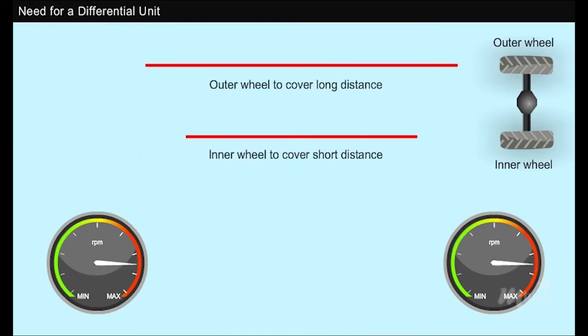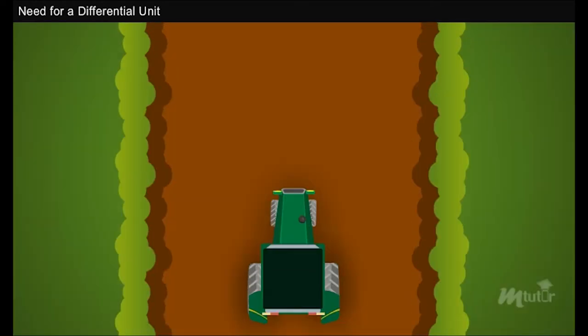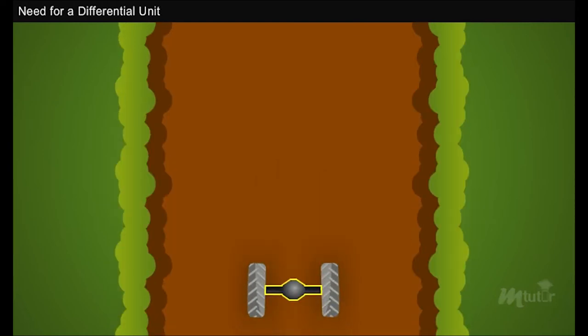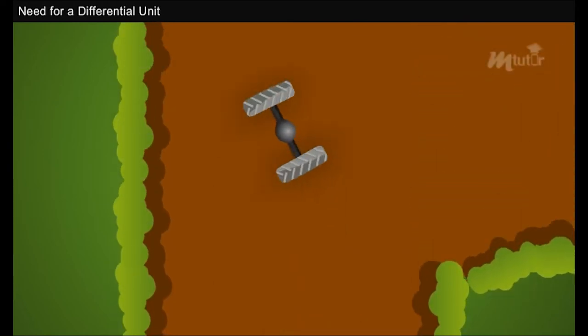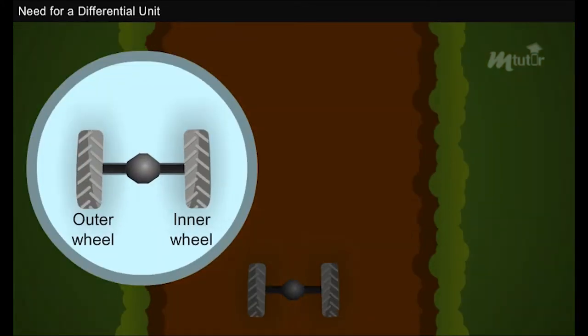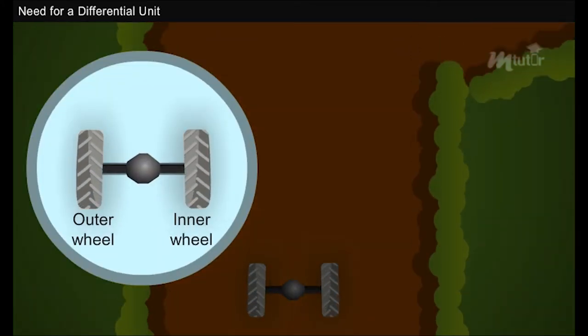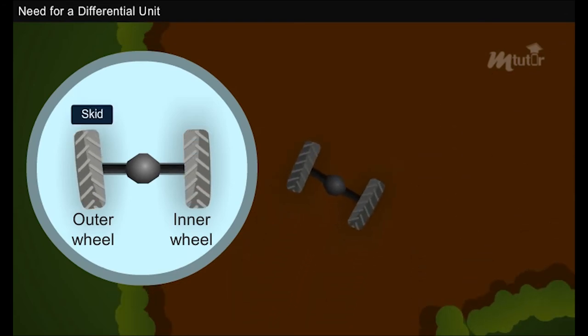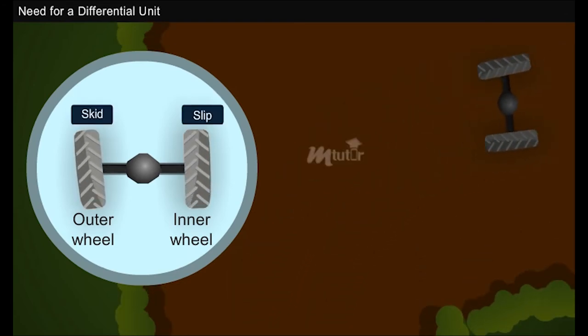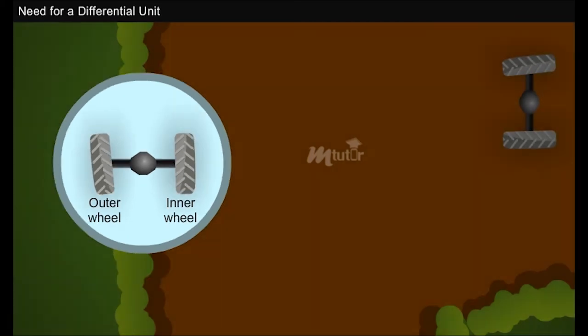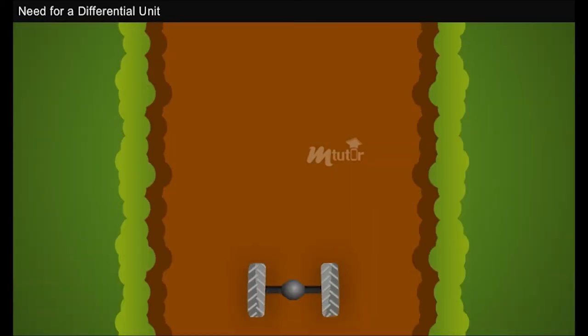Because while taking a turn, the outer wheel has to cover a long distance while the inner wheel has to cover a very small distance. As both wheels were connected in the same axle, they were unable to turn separately. When both wheels ran at the same speed, the outer wheel tended to skid when taking a long turn while the inner wheel slipped when trying to take a short turn.